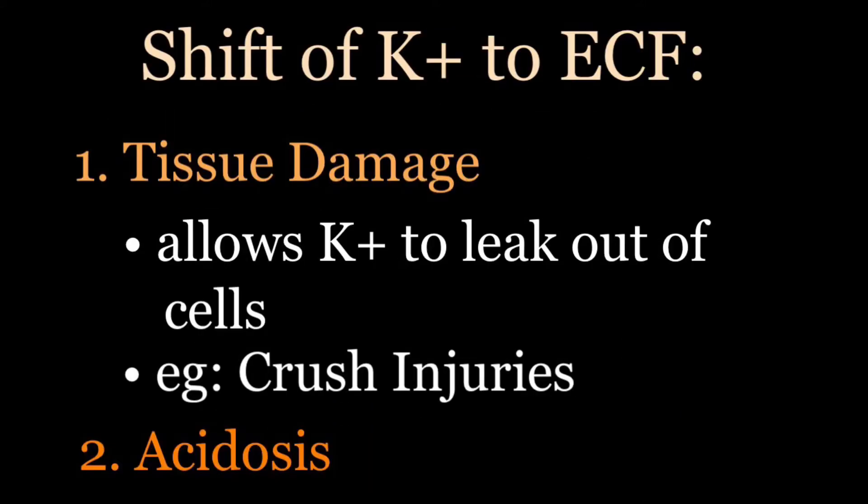The last cause is the movement of potassium from the intracellular space to the extracellular space. Since the intracellular space houses the majority of body potassium, anything that damages tissues can cause potassium to leak out of cells and into the bloodstream. Crush injuries are an example of this — crush injuries damage cells and allow potassium to escape into the blood.